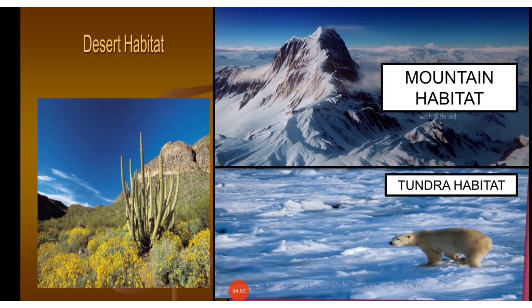Next is desert. Desert habitats are very dry places. Rainwater is insufficient. About one fifth of Earth's land surface is desert.